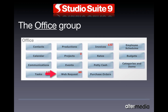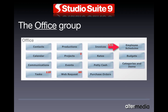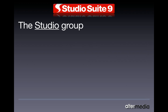WebRequest allows customers to make requests for studio services through a browser. Then there are invoices, rates — which is what you charge for items and services — petty cash, purchase orders, employee schedules, budgets like AICP budgets and recording budgets, and categories and items, which is where you can specify additional items and services.